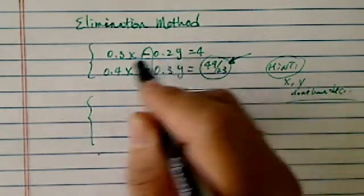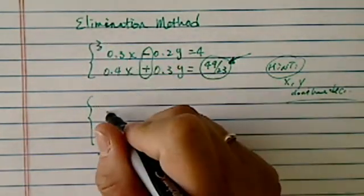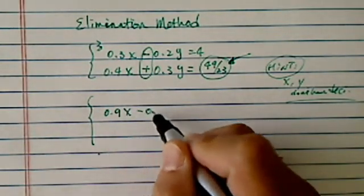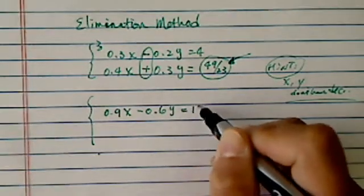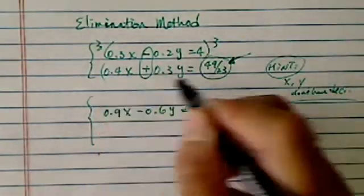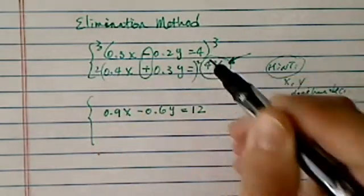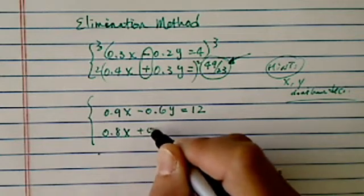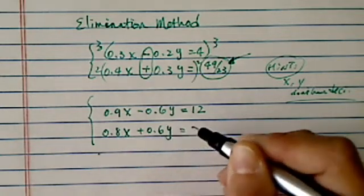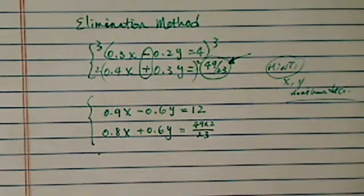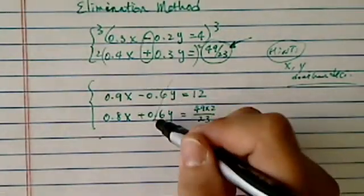The first equation, I'm going to multiply by 3. So I have 0.9x minus 0.6y is equal to 12. 3 is multiplied on both sides. And the second one, I'm going to multiply by 2 on both sides. So I have 0.8x plus 0.6y is equal to, here's the first one. I'm not going to use a decimal, I'm going to carry my fractions out.